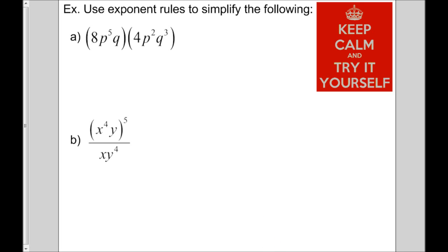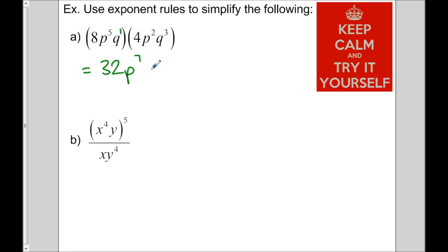Let's take these up. We're just multiplying, so we handle each type separately: 8 × 4 = 32. The p's multiply, giving p to the 7. And for q, with its invisible exponent of 1, 1 + 3 gives q to the 4.